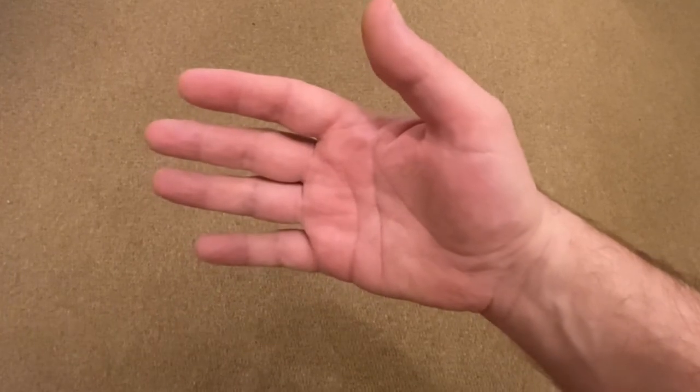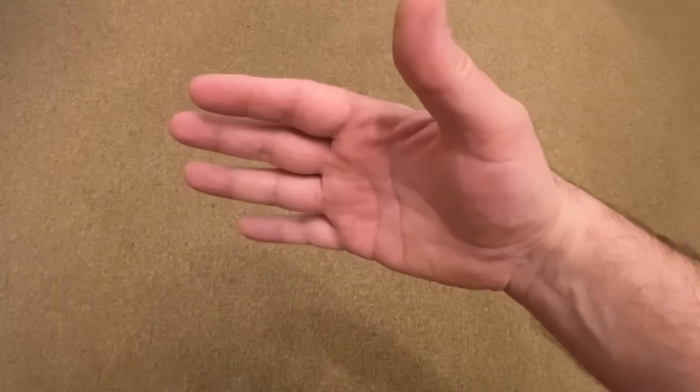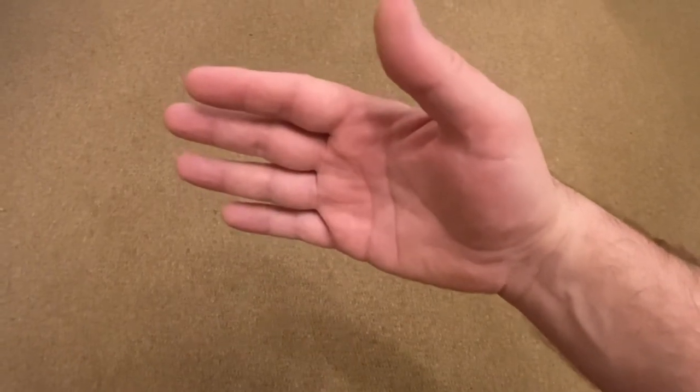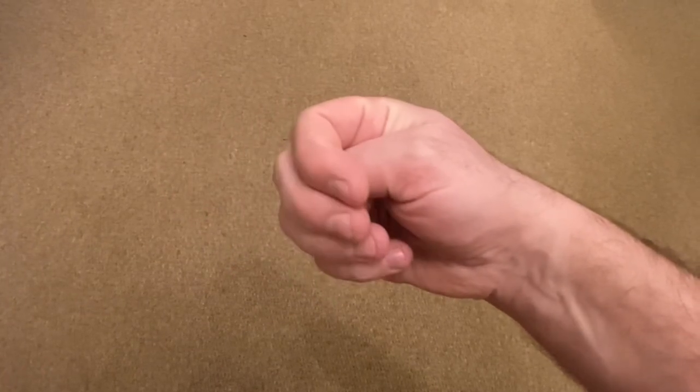What you're going to do is position your hand like so. The little finger is down towards the floor and the thumb is pointing up to the ceiling. Then gently take your thumb across your palm and wrap your fingers around it.